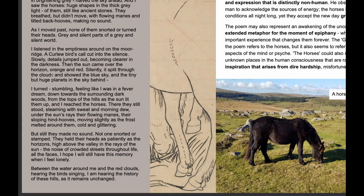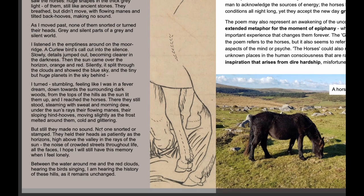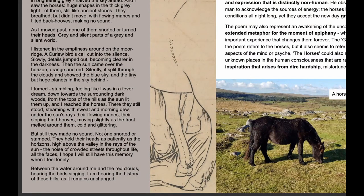Suddenly everything changes — the sun comes up, orange and red, it spills through the cloud and fills the world. This moment of grayness, darkness, and silence is completely cut through by the sun emerging in the middle of the poem. It makes him sort of panic — he turns, stumbles, feels like he's in a dream. He runs to the horses; there they are, steaming with sweat and morning dew under the sun's rays, frost glittering around them. It's almost like he thinks they're a mirage and has to check if they're real.